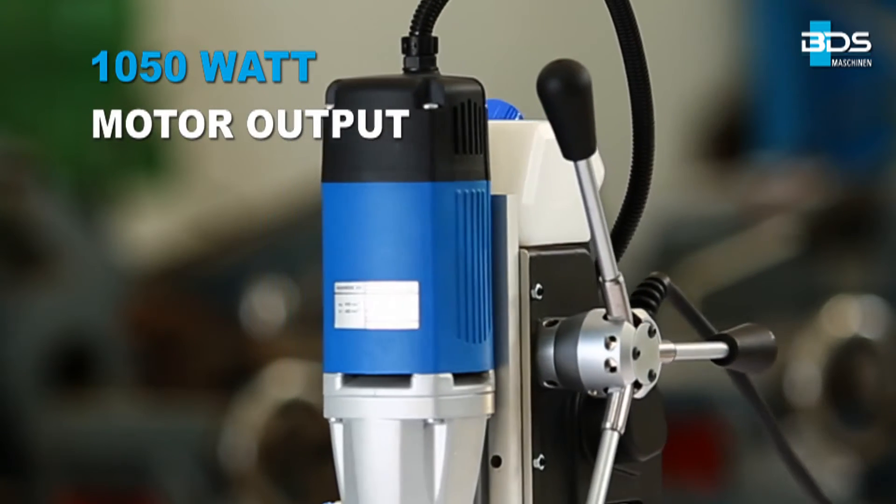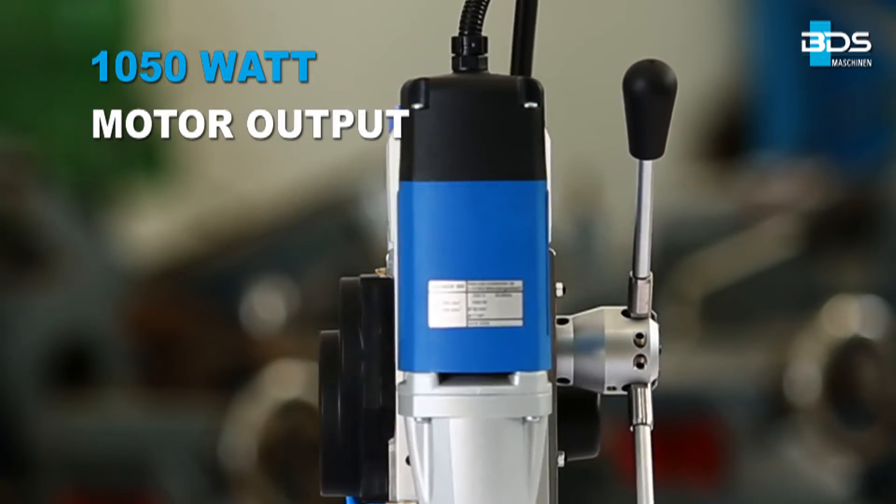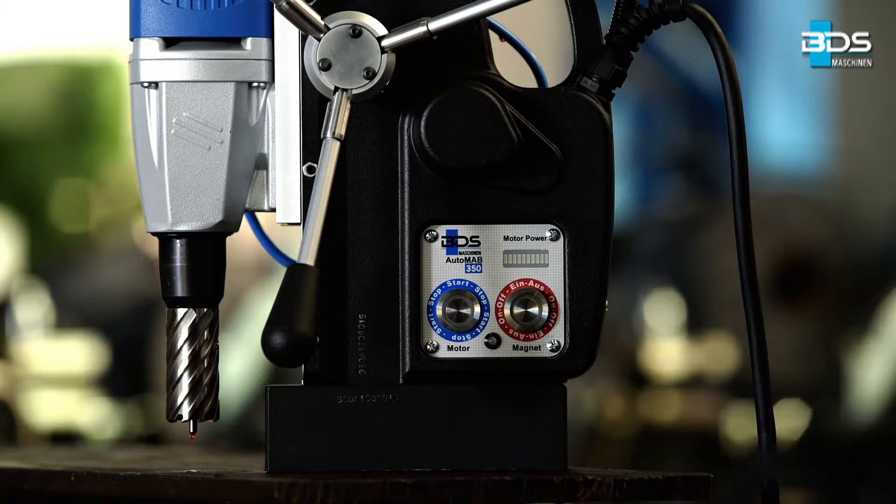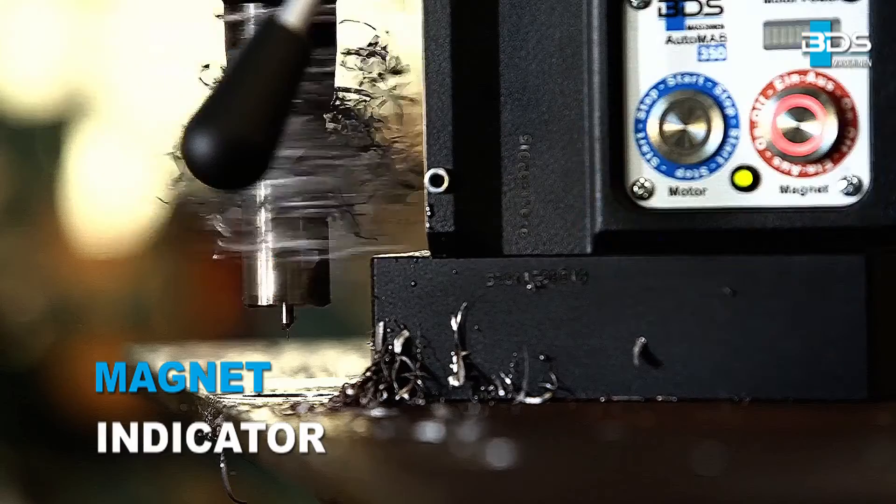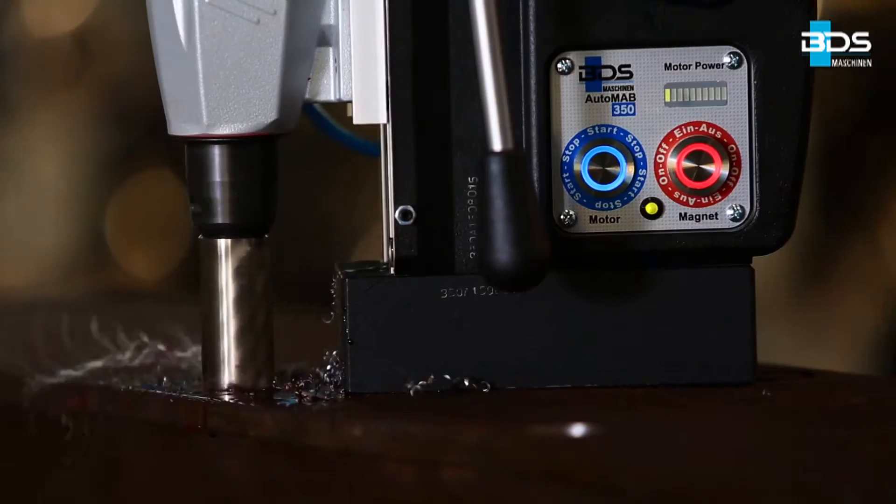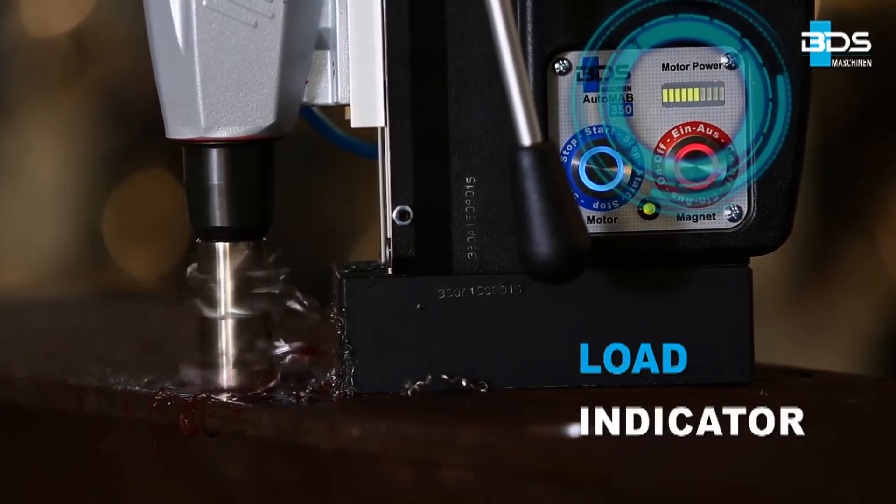The Automab 350 is equipped with Made in Germany 1050 watt powerful motor, next generation LED switches, intelligent magnet indicator, and load indicator for safety.